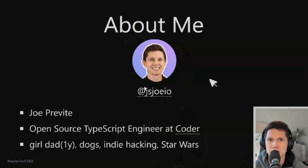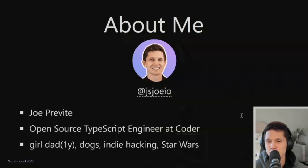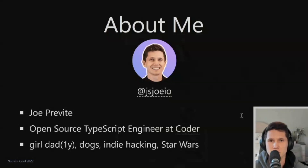A little bit about me. My name is Joe Previtt. I work as an open source TypeScript engineer at a startup called Coder, which helps teams move their development environments to the cloud. On a personal note, I'm a girl dad — I've got a daughter who's a little over a year. I've got two golden retrievers and I'm into indie hacking and Star Wars. So if you're into any of those things, hit me up on Twitter or Discord after the conference.